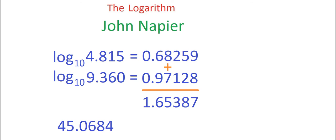We now have to work out what number that represents. For that, we would use a table of anti-logarithms, which would give us the number from that one, with that being 45.0682. To within the accuracy of the table of logarithms, we have the correct answer.